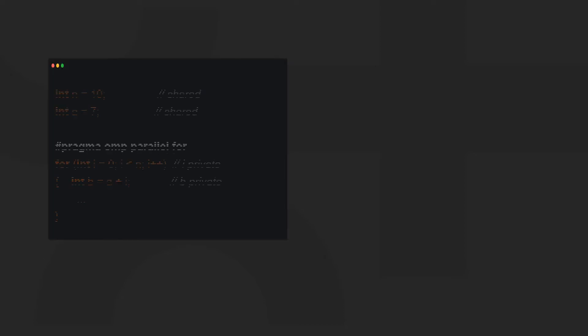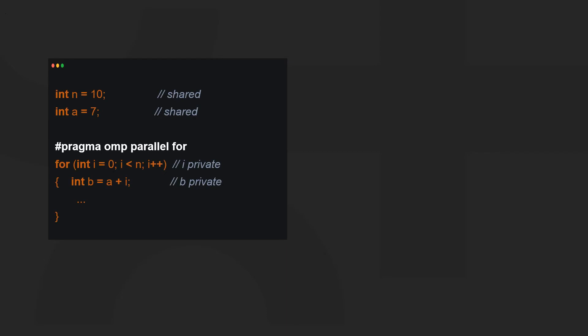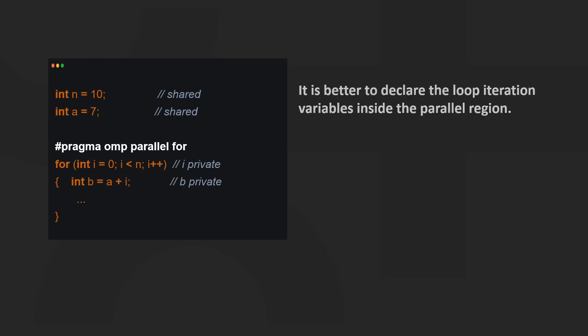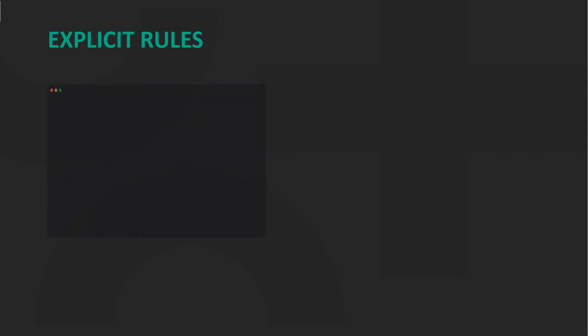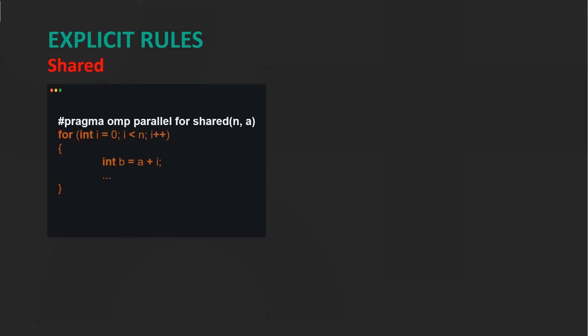It's better to declare loop iteration variables inside the parallel region. Here is how that looks. We can explicitly set the data sharing attribute of a variable. Let's look at the shared clause first. The shared list clause declares that all variables in the list are shared. Here, n and a are shared variables.